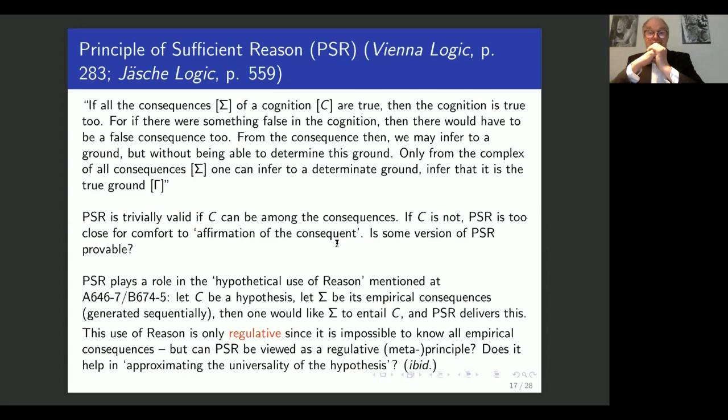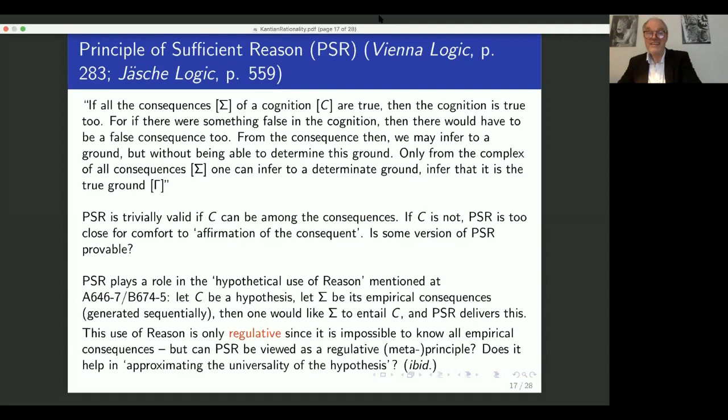But if C is not, then there's still something funny going on with the principle of sufficient reason, because it looks a bit like the fallacy affirmation of the consequent. P implies Q and Q, therefore P. It is a weaker form because you look not at the single consequence of P, but at all the consequences, but still. And the question is, is some version of the principle of sufficient reason provable? Can we show it to be consistent?